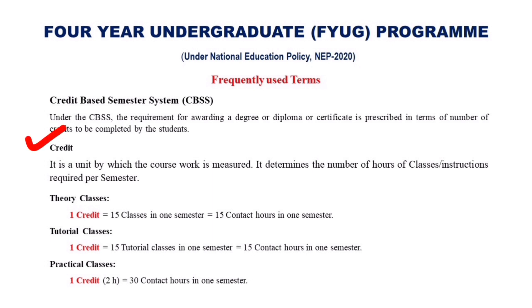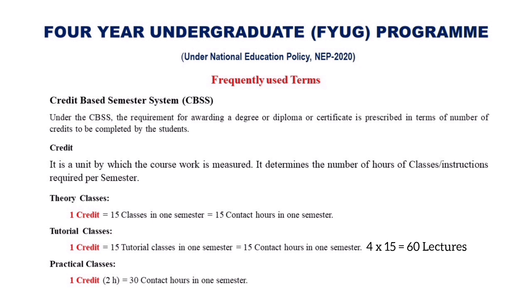Now, what is a credit? As per the CBSS system, the academic achievements of a student are measured in terms of credits. Credit is a unit by which the course work is measured. It determines the number of hours of class instruction required per semester. In case of theory and tutorial classes, one credit is equivalent to 15 classes in one semester. So in a paper of four credits, there will be 4 × 15 = 60 lectures and tutorials, each class having one hour.